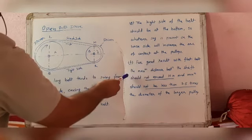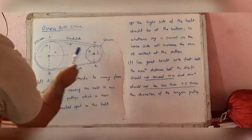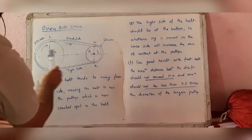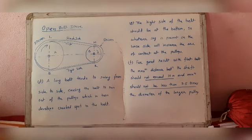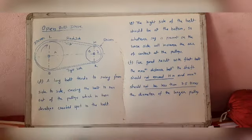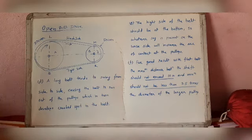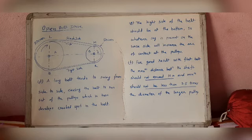For good results with a flat belt, the maximum distance between shafts should not exceed 10 meters, and the minimum distance should not be less than 3.5 times the diameter of the larger pulley.